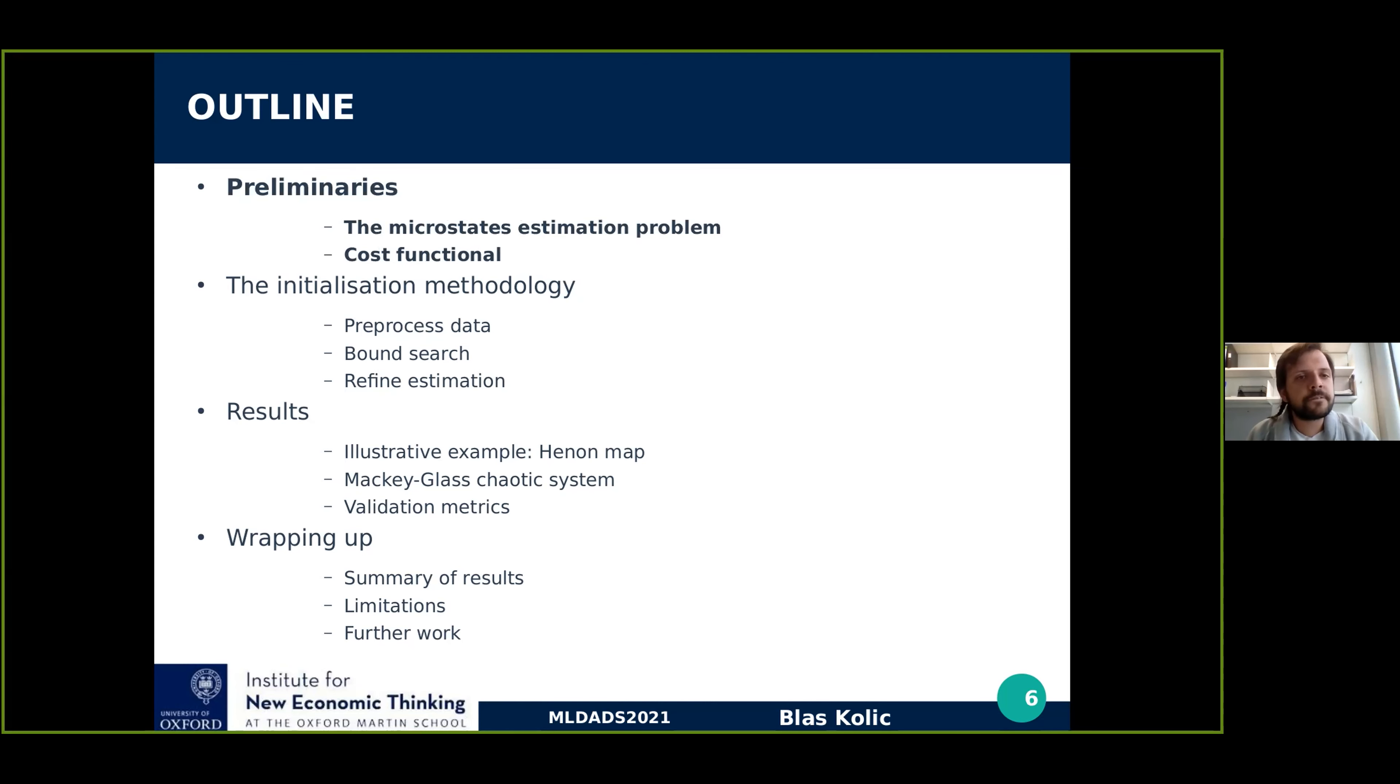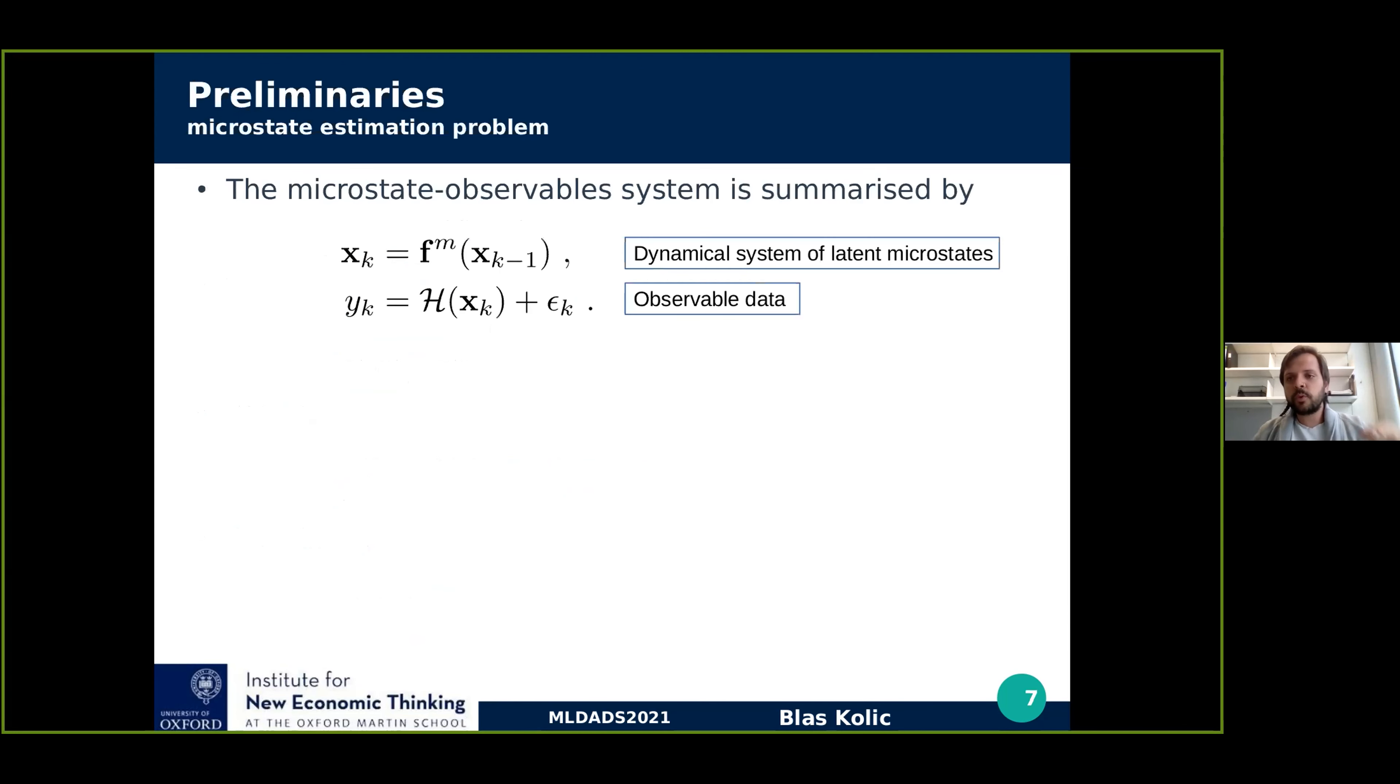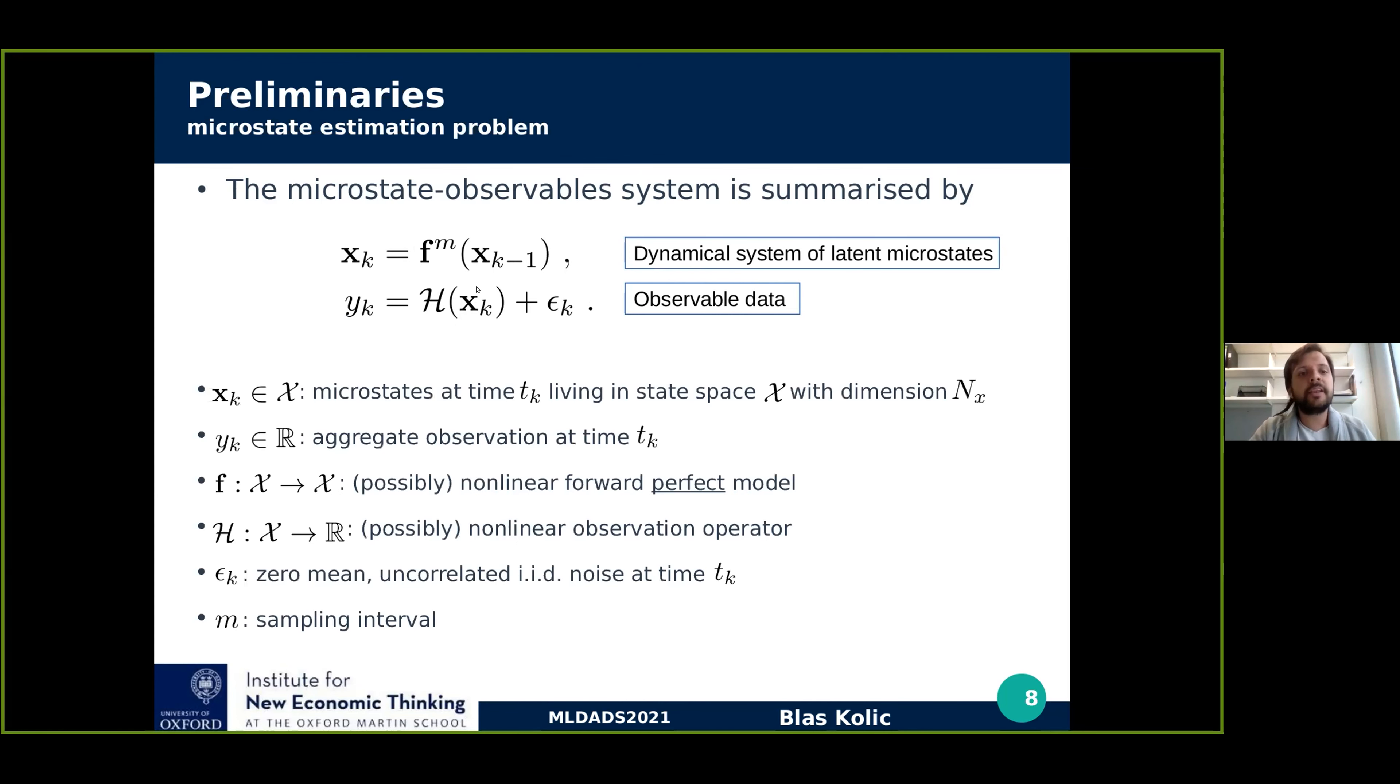First, with the preliminaries, the ingredients that we need for tackling this system is first, a model of the underlying dynamics, a model that we call f of the microstates x. The model takes the microstates from time tk minus one to time tk through the possibly non-linear model f. Then we need an interface to connect that with the macro data. So that interface here, it's an operator h that takes the microstates from a high dimensional space to a real number. This real number can be polluted with observational noise, which we call epsilon k.